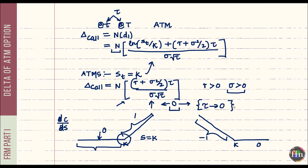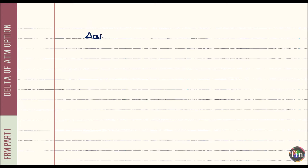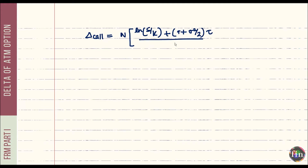Coming back to the delta formula, delta of a call is N[ (ln(S/K) + (r + σ²/2)·τ) / (σ√τ) ]. Given this, can we refine our definition of 'at the money' to make the 0.5 rule of thumb more accurate?